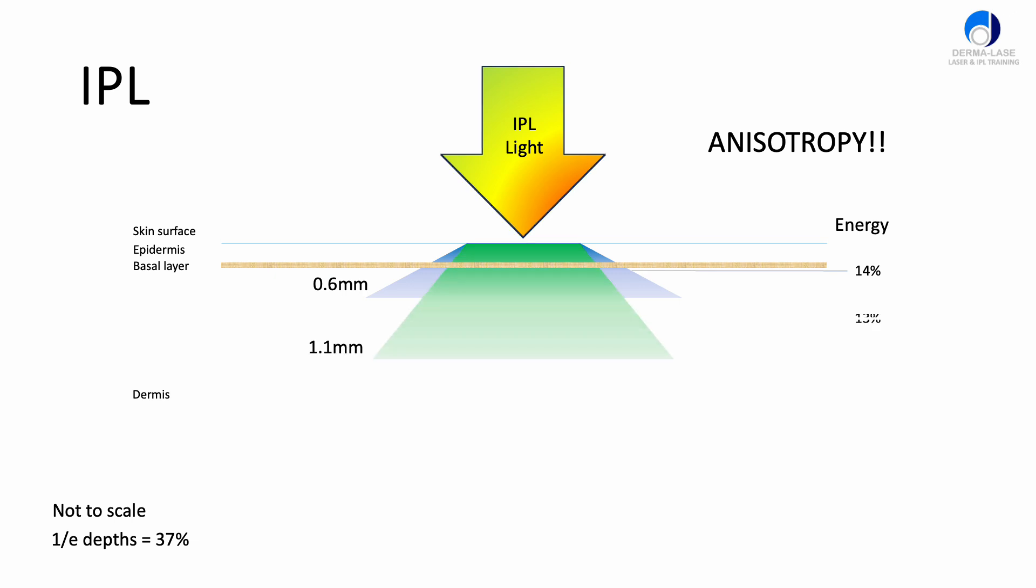Then we have the green light which is almost the same as blue, about 13% of the total energy, but it penetrates a little bit deeper about 1.1 millimeters because its anisotropy is not as wide as with blue light. Then we have the yellow light. There's only about 4% of the energy in the yellow part of the spectrum so it's a relatively small region of the overall output but it does penetrate a little bit deeper, about 1.6 millimeters in depth.